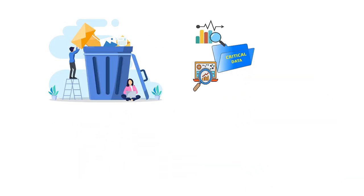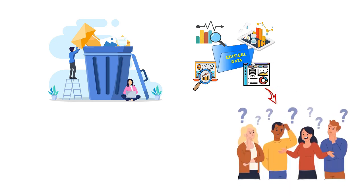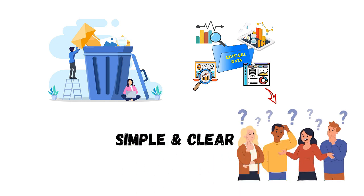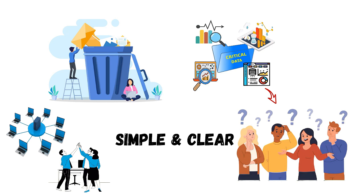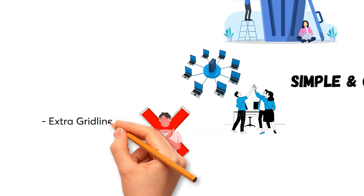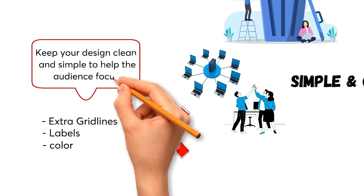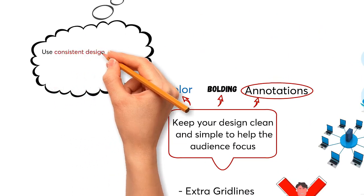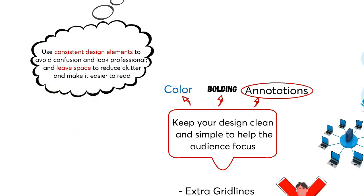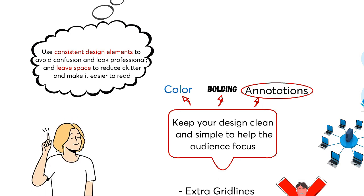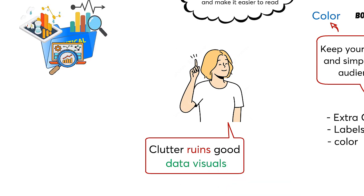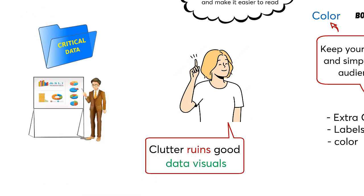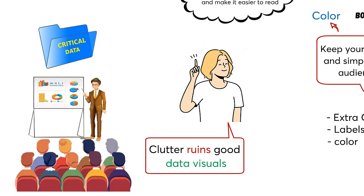Chapter 3 is titled Clutter is Your Enemy. In this chapter, Cole stresses the need to remove unnecessary elements from data visuals. Extra details can hide the main message, making it difficult for the audience to grasp the important points. By keeping things simple and clear, our data stories become more engaging and easier to understand. Get rid of unnecessary elements like extra grid lines, labels, and colors. Make important data stand out using color, bolding, or annotations. Use consistent design elements to avoid confusion, and leave space to reduce clutter and make it easier to read.